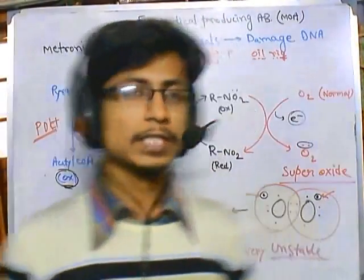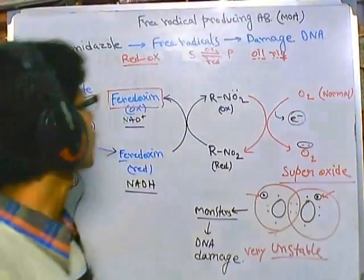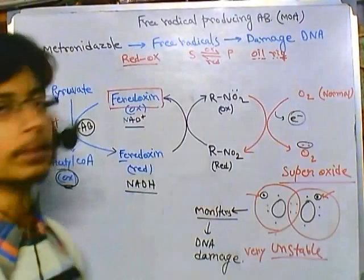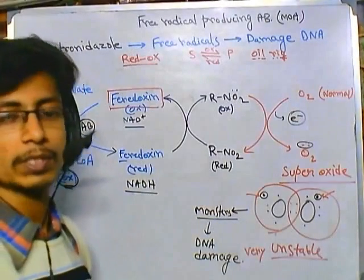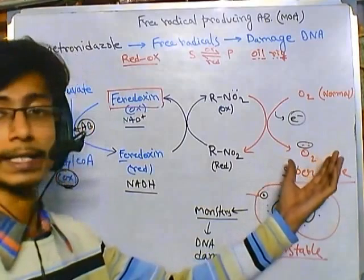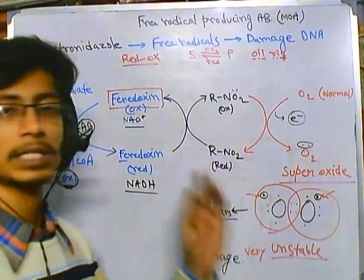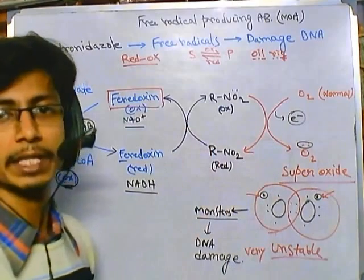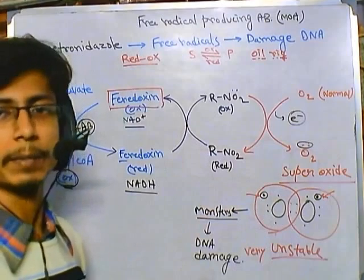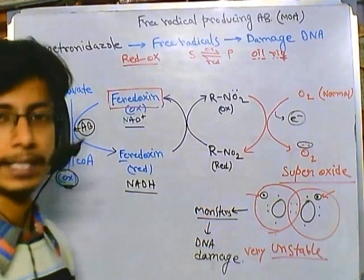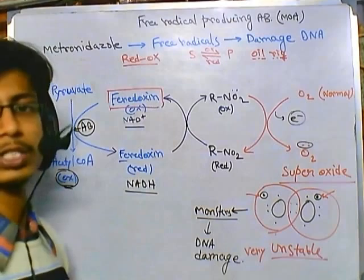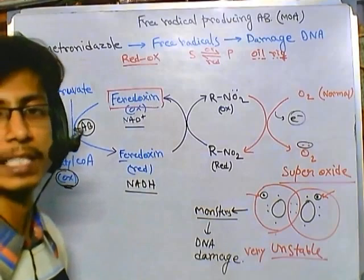Welcome back. We have just discussed the mechanism of action of metronidazole antibiotic, which produces a free radical — in this case a superoxide — which damages the DNA and sometimes the cell membrane and cell wall of bacterial cells. That is how we use metronidazole to treat different bacterial infections.